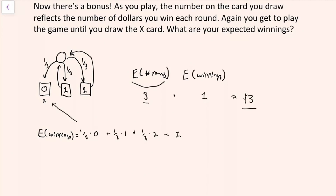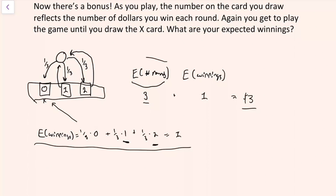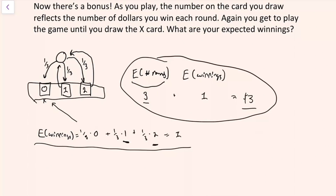The thing that makes this problem a little bit trickier is understanding that the expected winnings per round now depends on the card values one and two. But you can solve this in a very simple way by just multiplying the expected number of rounds by the expected winnings per round. So now you've gotten past the first question, which was easy, and the second follow-up, which was a bit more difficult.